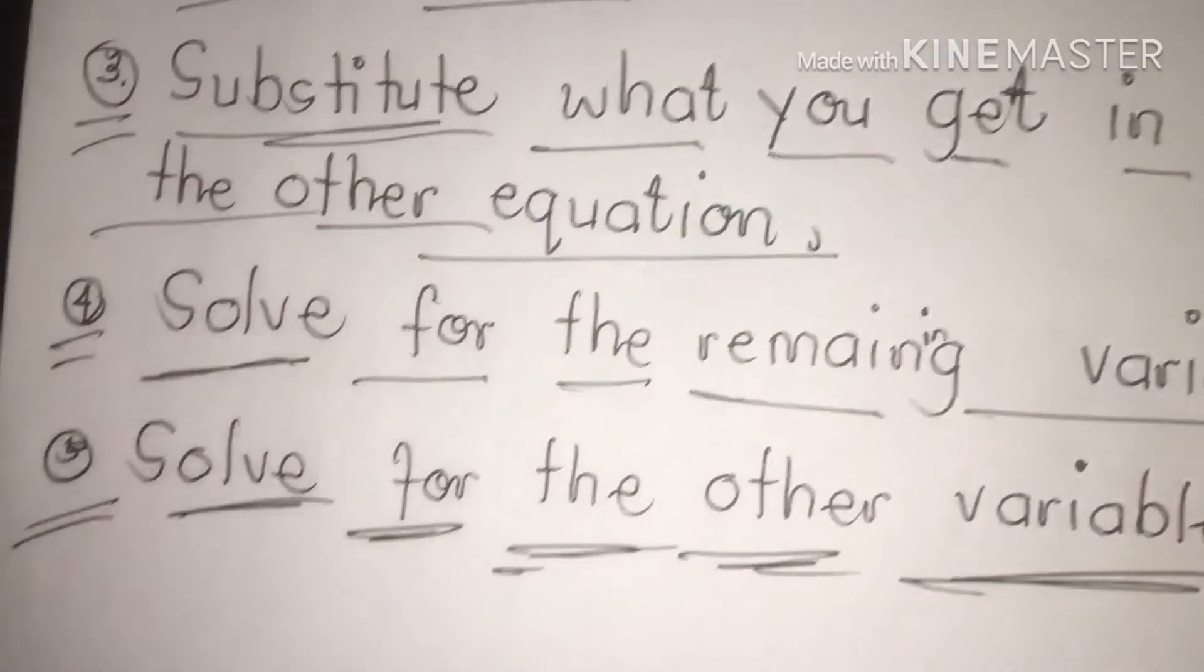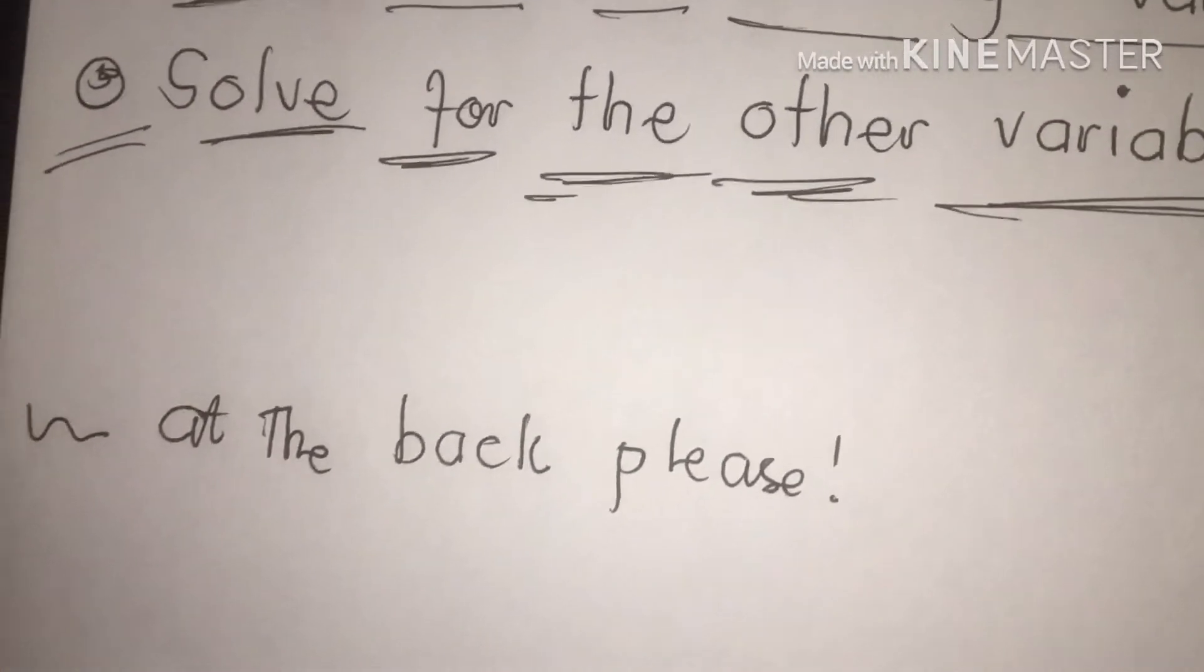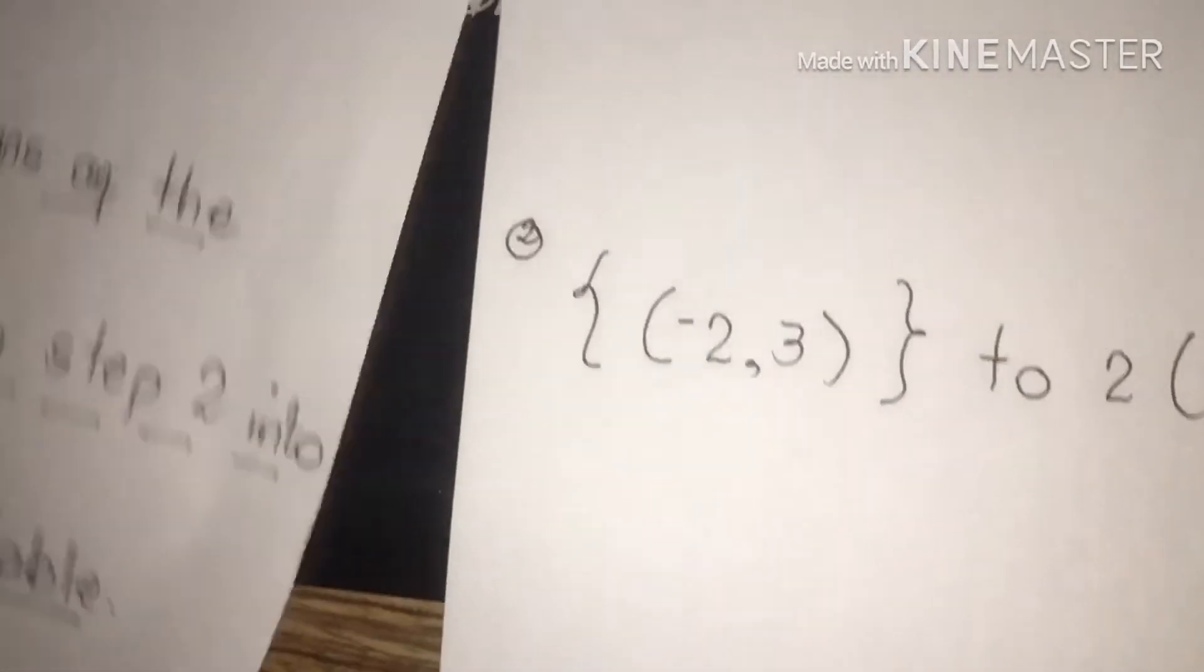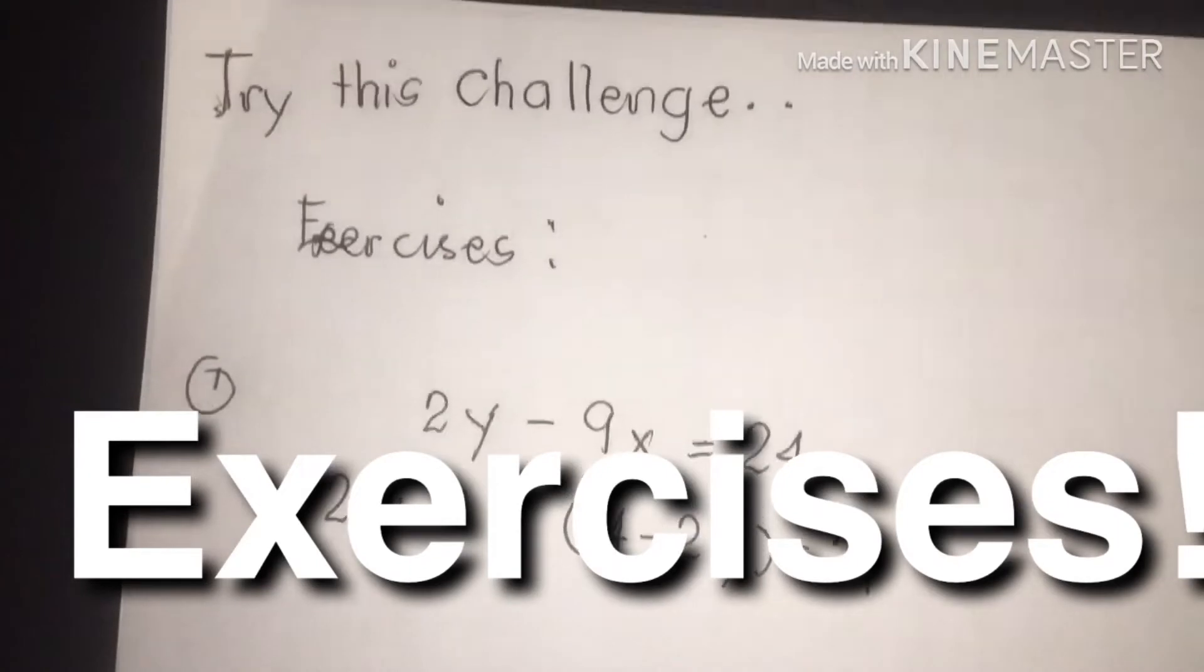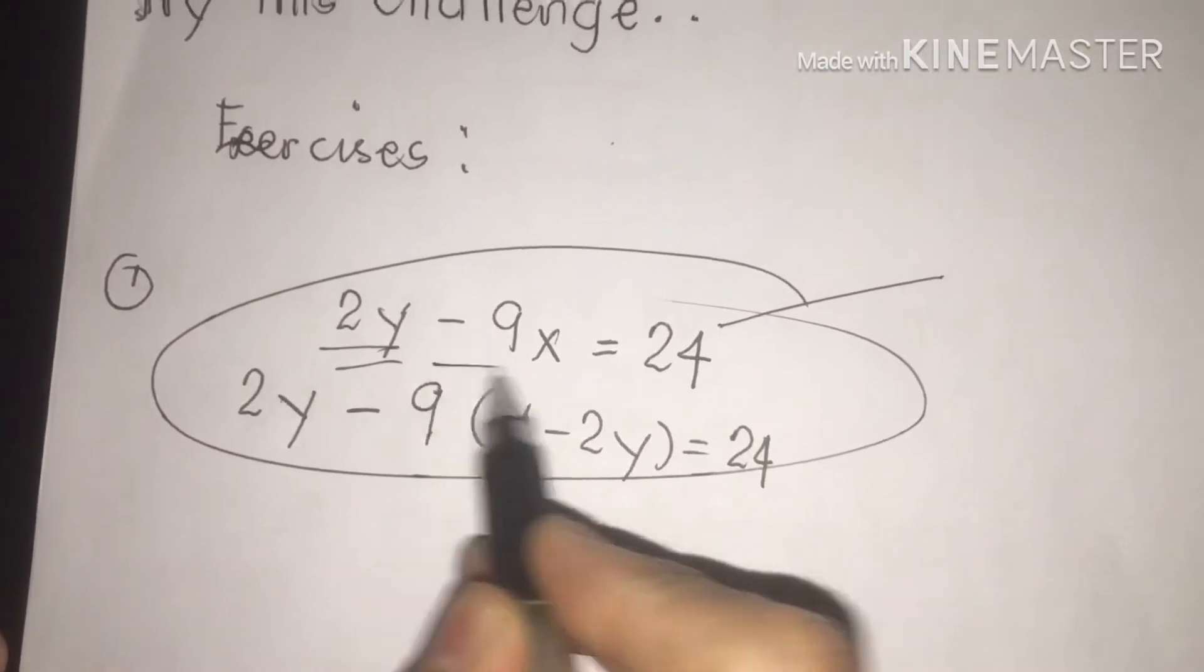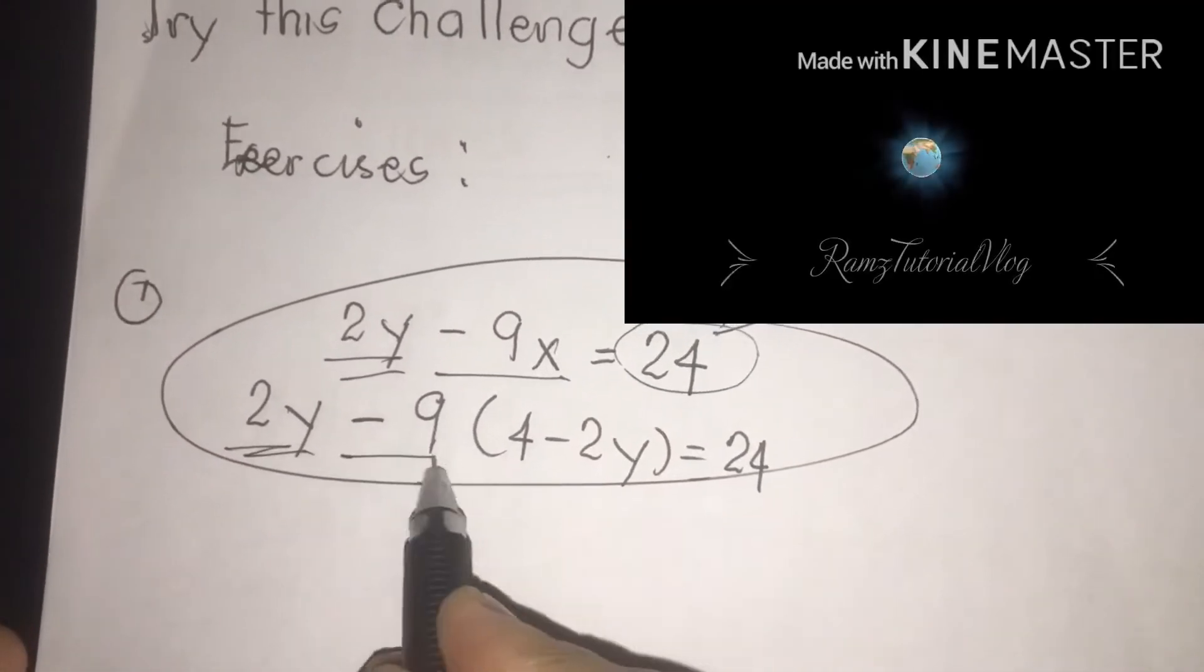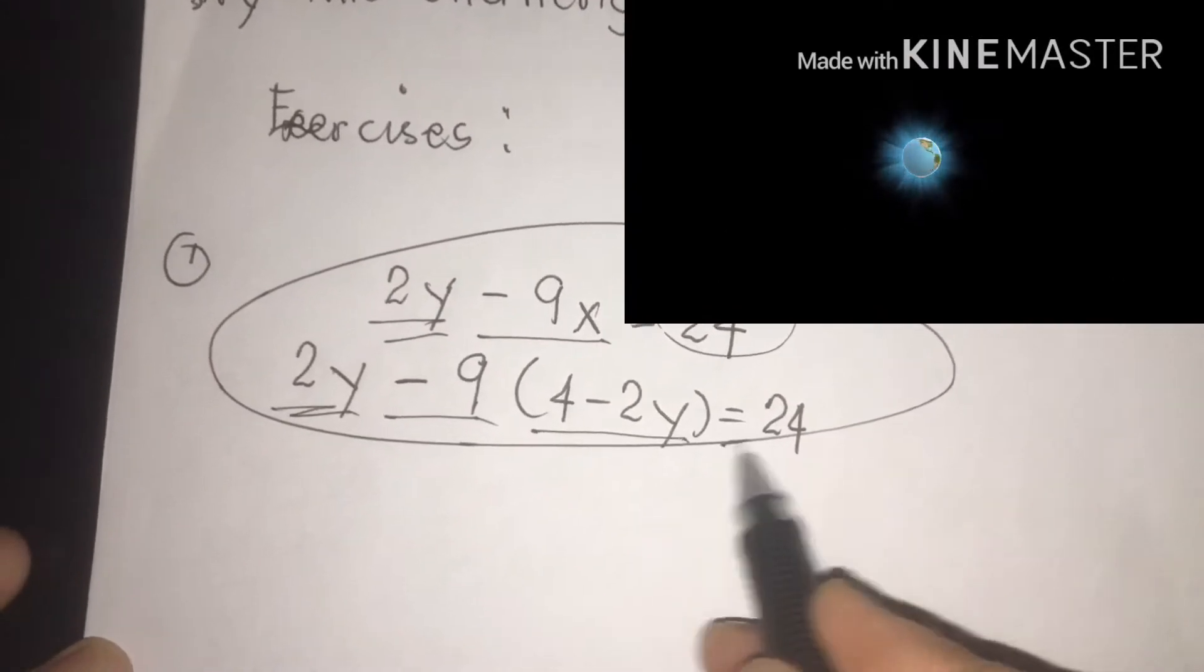Let's proceed to our exercises. My dear students, please follow my videos. Here we go. Number one, we have the first challenge that we are going to solve: the given is 2y minus 9x is equal to 24. 2y minus 9, close and open parenthesis, 4 minus 2y is equal to 24.